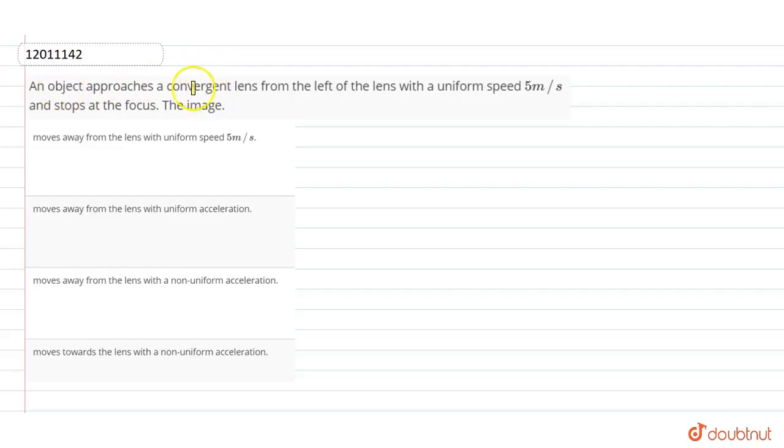An object approaches a convergent lens from the left with a uniform speed of 5 meters per second and stops at the focus.